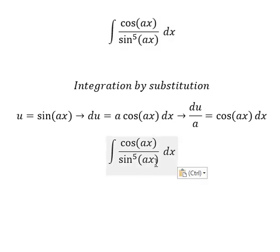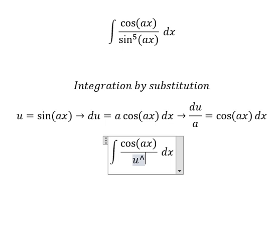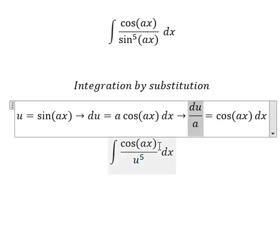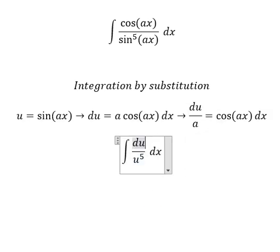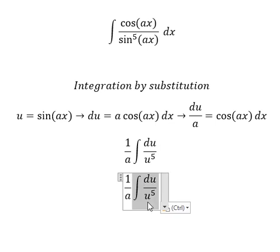Next, this one we change by u, and we have one over a times the integral of u to the power of negative 5. Next we can write like this.